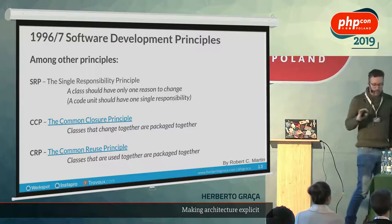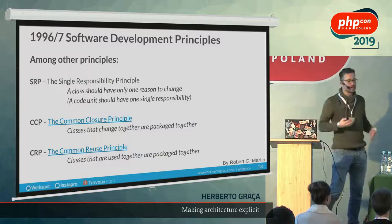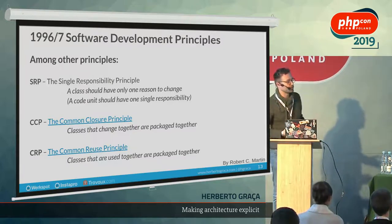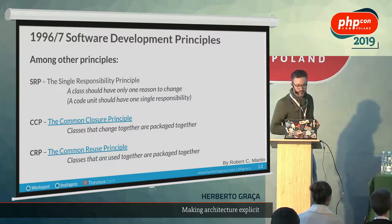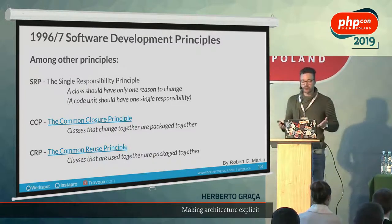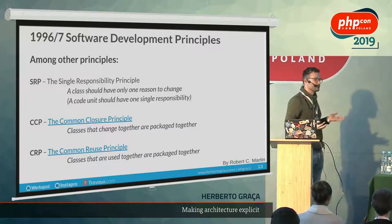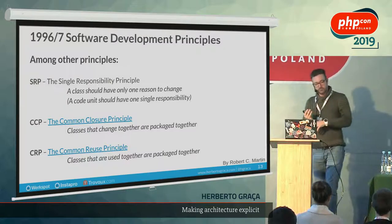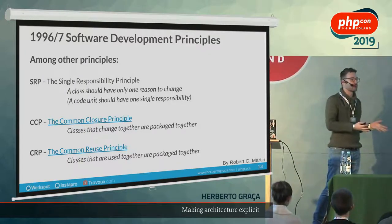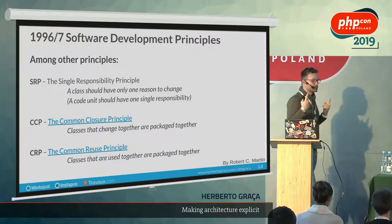In the late 90s, Uncle Bob — Robert C. Martin — published a series of principles. He didn't come up with them himself; he learned them from books, experience, and colleagues. Three of those principles are important for this talk. First, the Single Responsibility Principle: a class should have only one reason to change. I think of it as: a code unit should have one single responsibility. A method should have one responsibility, a module should have one responsibility. An ORM, for example, has one single responsibility: translate objects into a database.